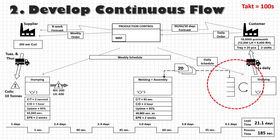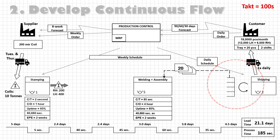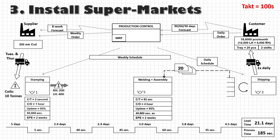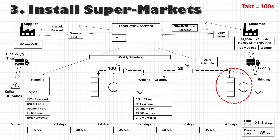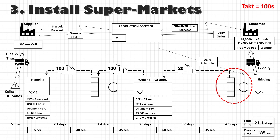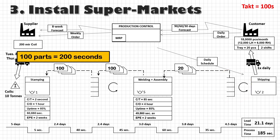We don't see any other possibility to create a continuous flow, so let us move ahead and install supermarkets. We already have one supermarket at the finished goods. We can put another supermarket between the stamping press and this assembly process section. The parts in the supermarket are smaller in size — let us say 100 parts can be kept in a bin, so a withdrawal kanban of 100 parts will be released in one lot, and the stamping process will produce according to this kanban. That means stamping no longer receives a schedule from the central planning department. But there is one problem: 100 parts means only 200 seconds of production for stamping, and you cannot take a changeover every 3–4 minutes in the stamping process.